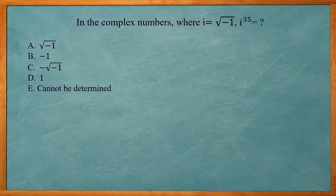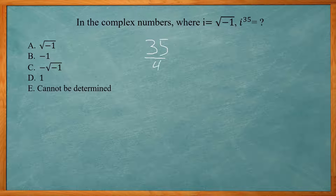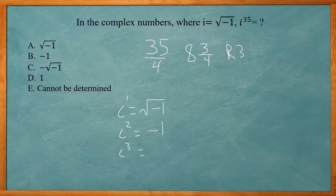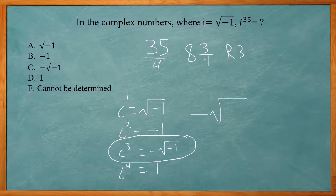This problem reads: in the complex numbers where i is the square root of negative 1, i to the 35th power is equal to what? Our pattern of i's repeats every 4, so take 35 divided by 4, which gives 8 remainder 3. i to the first is square root of negative 1, i squared is negative 1, i to the third is negative square root of negative 1, i to the fourth is positive 1. With a remainder of 3, i to the 35th equals negative square root of negative 1 — answer choice C.